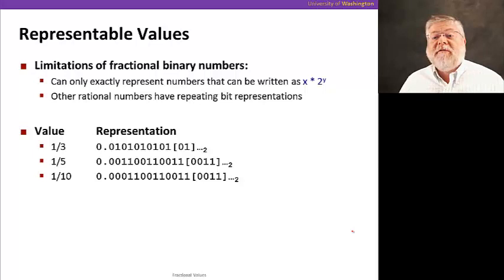So what are some of the limitations of binary numbers and the representable values? Remember, we had limitations on integers. We could only be so large and so negative before we ran out of room in our bit representations. So we can only, first of all, represent numbers exactly if they can be written in the form x times two to some power of y.